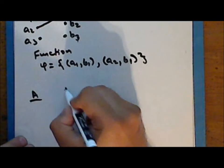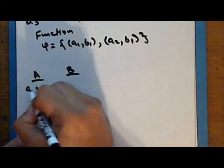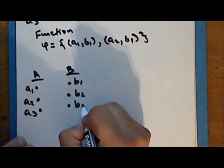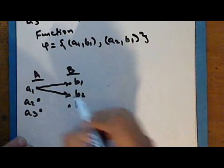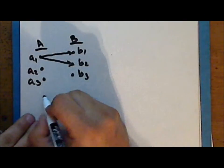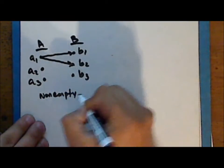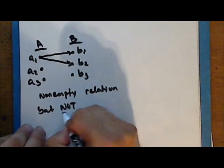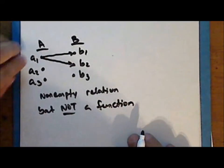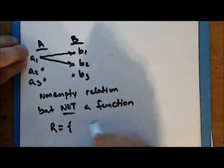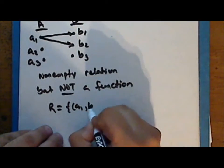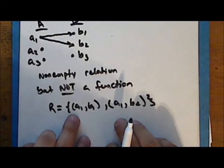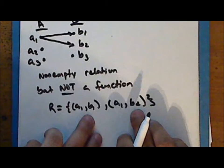If instead a given element is paired with two separate elements in the second set, then this is a non-empty relation, but it is not a function. This relation contains ordered pairs (a₁, b₁) and (a₁, b₂), and it does not satisfy the condition that a given first coordinate has a unique second coordinate.